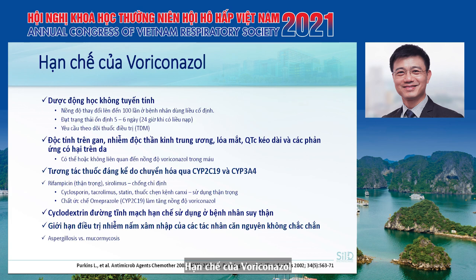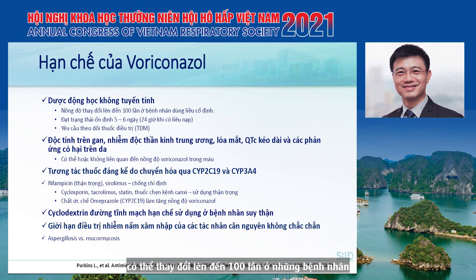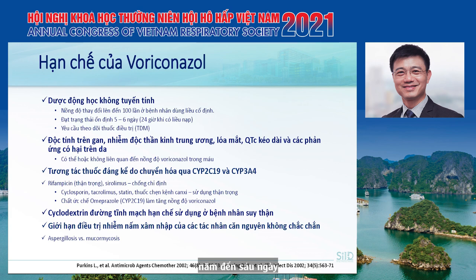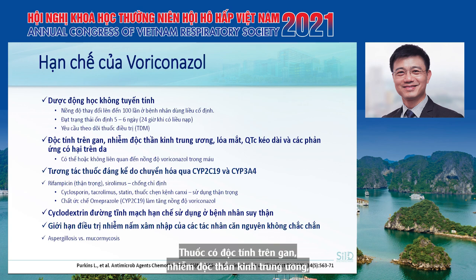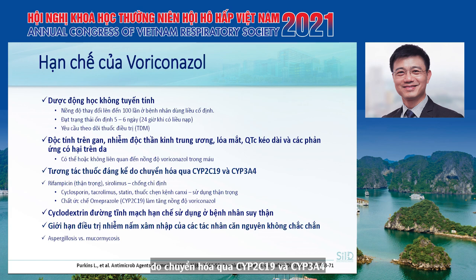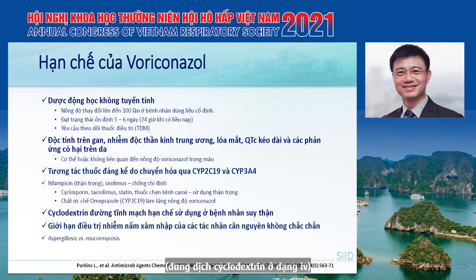There are some limitations of voriconazole. This triazole has non-linear pharmacokinetics, so blood concentrations can vary up to 10-fold in patients receiving a fixed dose. The drug reaches steady state in 5 to 6 days, but with a loading dose, steady state can be reached within 24 hours. Therapeutic drug monitoring is recommended. Voriconazole has hepatotoxicity, CNS toxicity, photopsia, and prolonged QT, and significant drug interactions via CYP2C19 and CYP3A4.